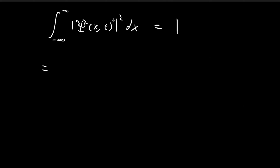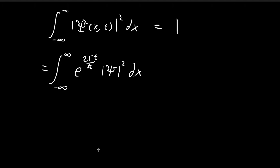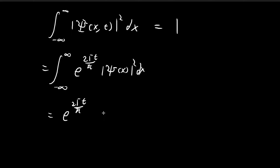We can now substitute this into the normalization integral. The integral becomes e to the power of 2 gamma t over h-bar, times the integral of the absolute value of xi of x squared dx. Since the exponential factor has no x dependence, we can pull it outside the integral.